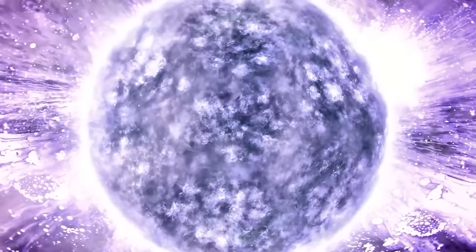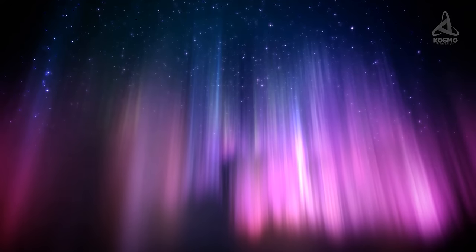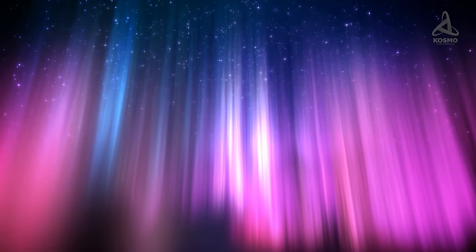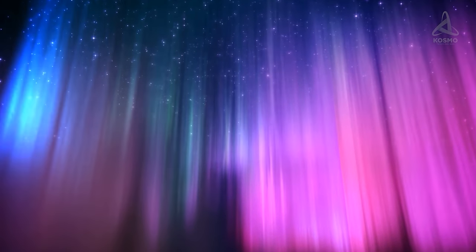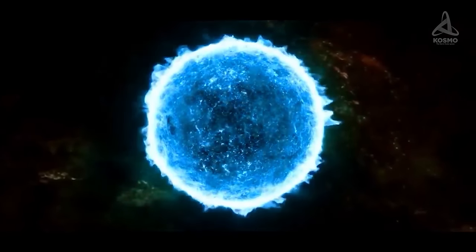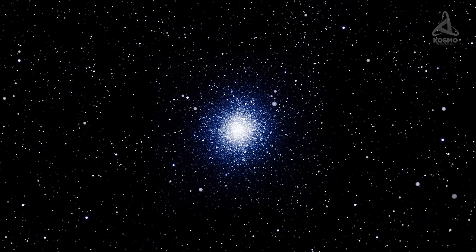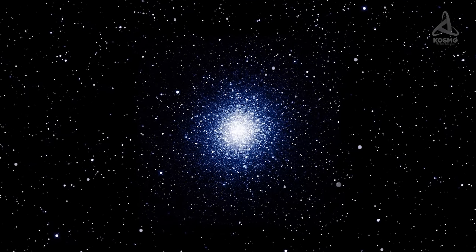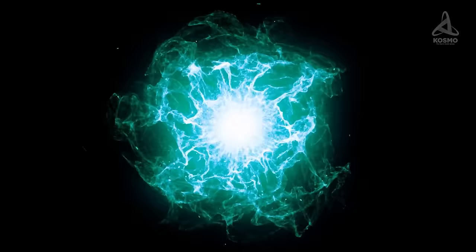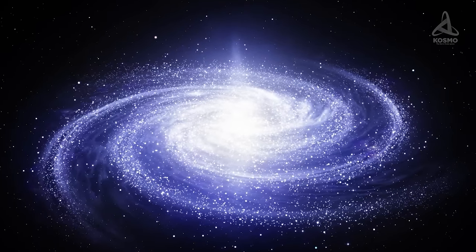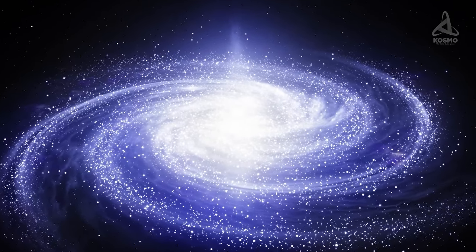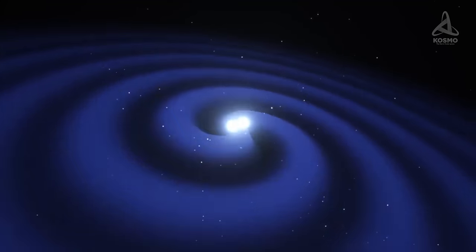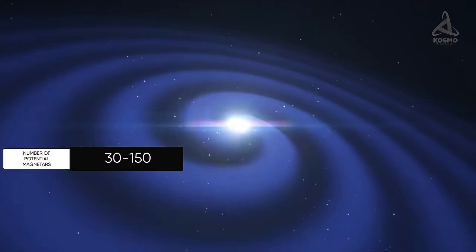In essence, SGR and AXP are different phases in the life of one and the same object. According to scientists, a magnetar exists as an SGR pulsar for the first 10,000 years. That is, it's a pulsar visible in regular light and repeatedly emitting bursts of soft gamma rays. As time goes by, it exhausts its properties and recedes into the invisible spectrum when it can be seen to us only in the X-ray range as an AXP. According to different sources, today, among billions of neutron stars, the number of known potential magnetars ranges from 30 to 150.